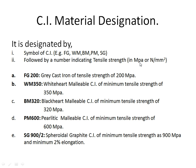For example, suppose there is a symbol FG200. FG indicates the gray cast iron and 200 indicates the number which shows its tensile stress. The meaning of FG200 is it is a gray cast iron having tensile strength of 200 MPa.